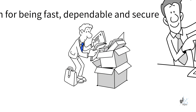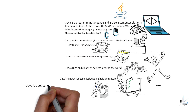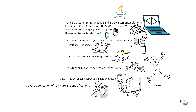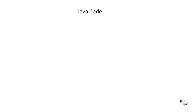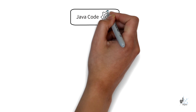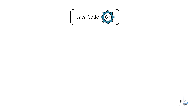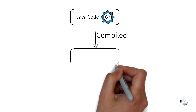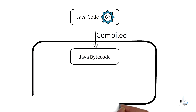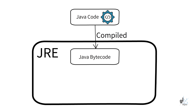Java is known for being fast, dependable, and secure. It is a collection of software and specifications. Java is a high-level programming language that runs within its own environment known as the JRE, Java Runtime Environment. A core part of the JRE is the JVM or Java Virtual Machine. Java is first compiled into bytecode. Java bytecode can only run within the JRE. The JVM interprets the bytecode in order to run it on the underlying hardware.